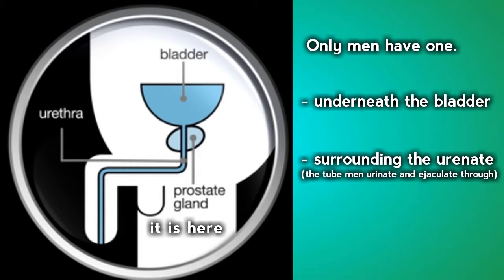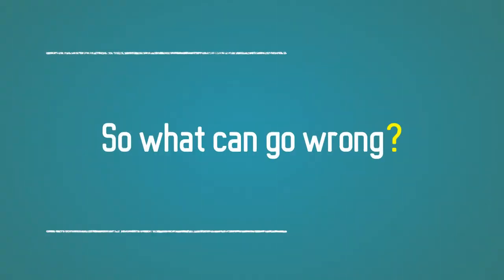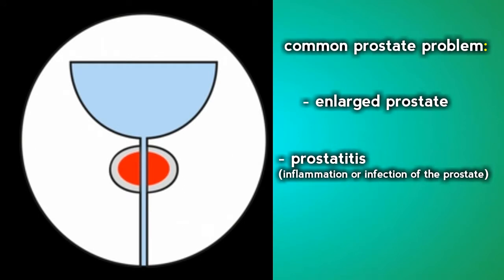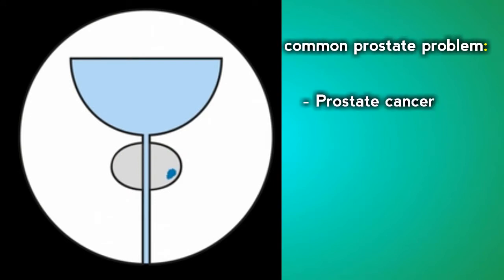Surrounding the urethra, the tube men urinate and ejaculate through. So what can go wrong? Common prostate problems: enlarged prostate, prostatitis (inflammation or infection of the prostate), and prostate cancer.